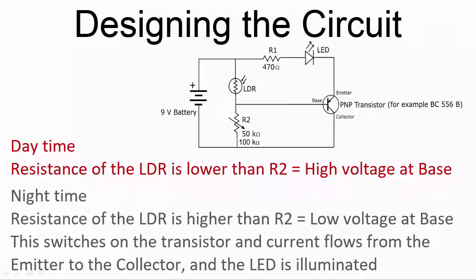If the voltage at the base is higher than the voltage at the emitter, the transistor is not switched on, so the LED is not illuminated.